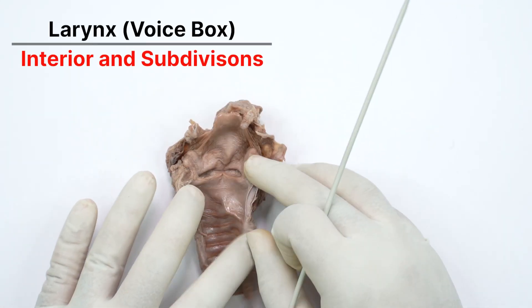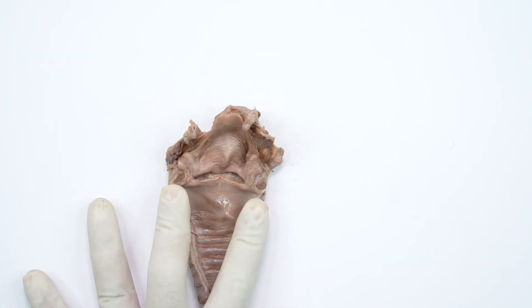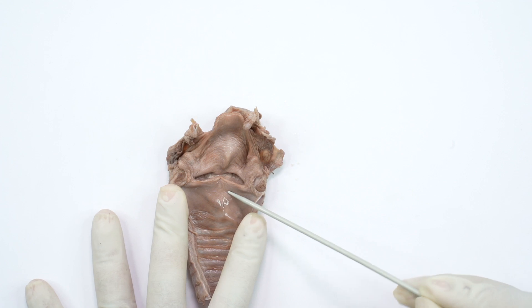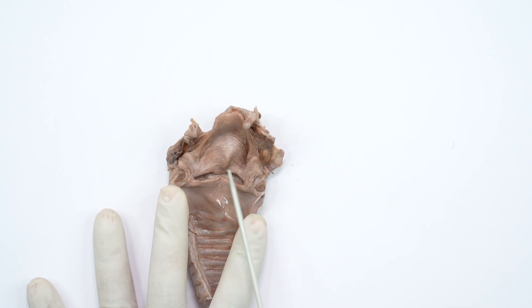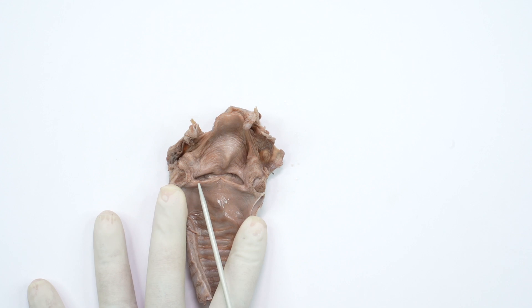What are the parts of the laryngeal cavity? Remember the laryngeal cavity has two prominent pairs of folds. The upper folds are called vestibular folds, the lower folds are called the vocal folds.